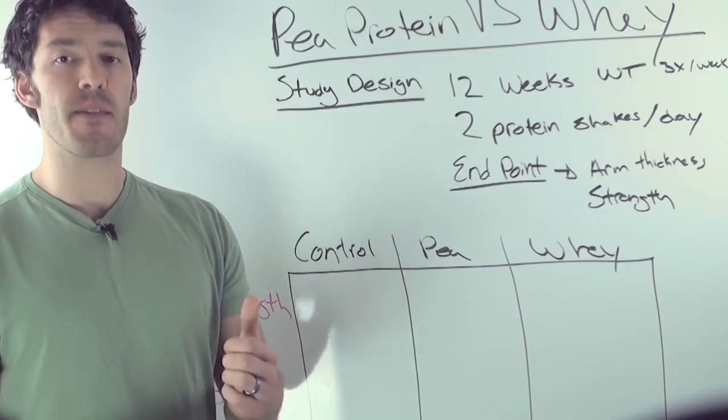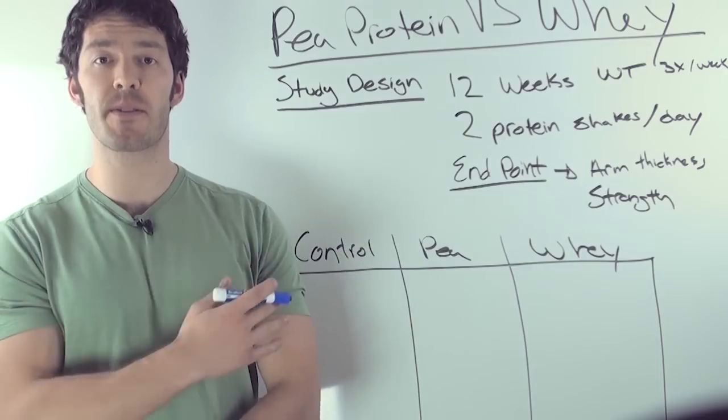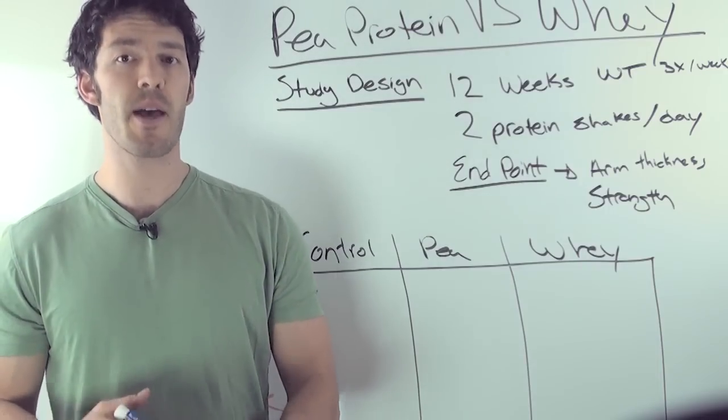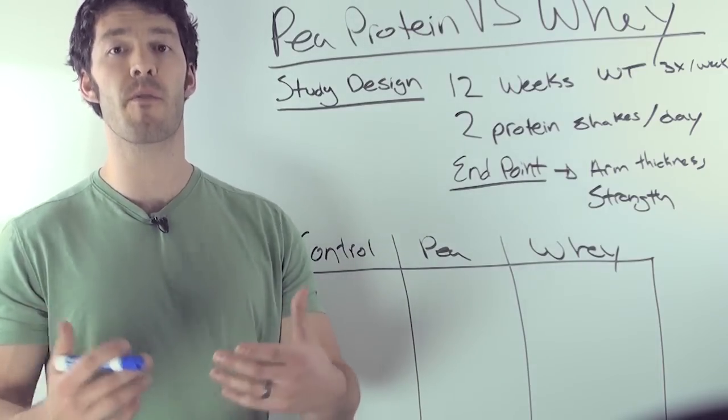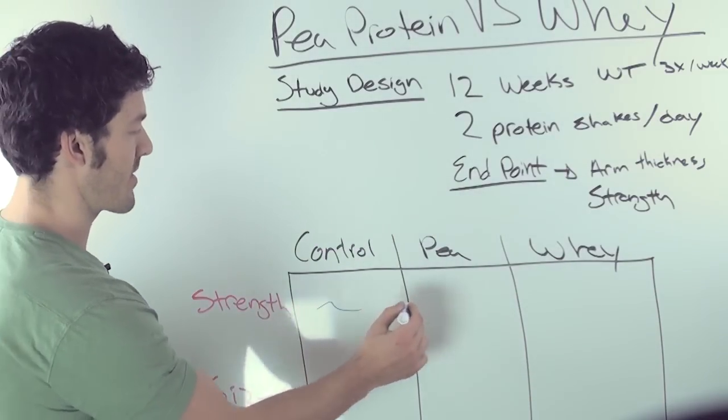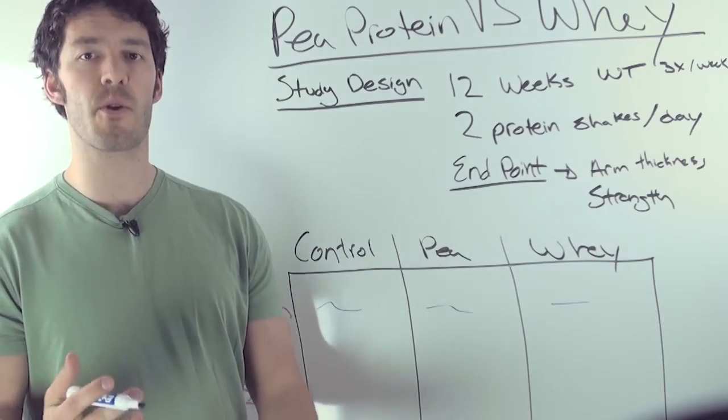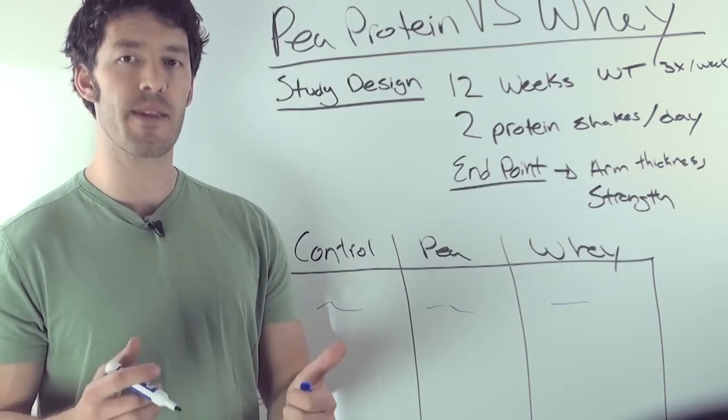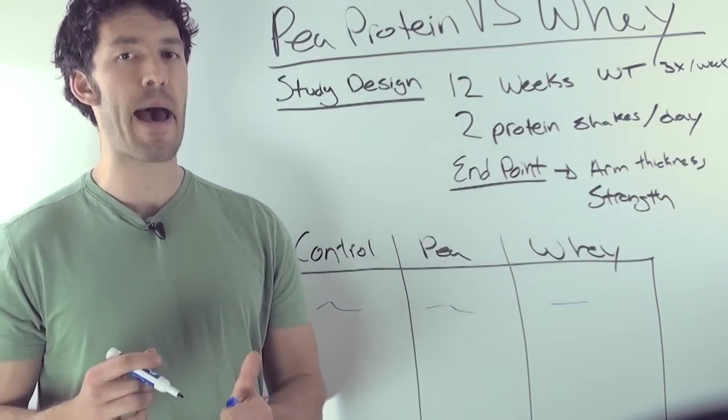They measured strength markers and looked at bicep thickness, how thick did the muscles grow over the course of 12 weeks. What we see here is the strength was the same for all groups. There was really no difference in strength, assessed through a one-rep max test.